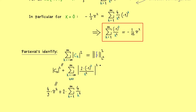Now we go to the right-hand side. This is the inner product of f with itself, given by an integral with a factor of 1/(2π) in front. Inside the integral we find our quadratic function squared — a polynomial of degree 4, which is not hard to integrate. Skipping the calculation, the result is 8/15 · π⁴.